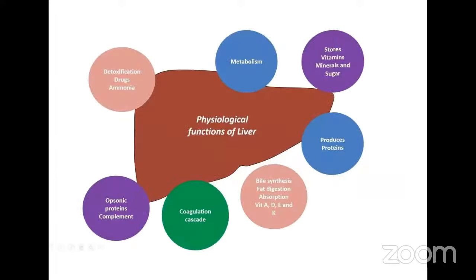There are hundreds of functions of the liver. The main functions include metabolic functions — it stores vitamins, minerals, and regulates sugar balance through gluconeogenesis and glycogenolysis. It produces all important proteins including albumin, and is important in fat digestion and absorption of fat-soluble vitamins A, D, E, and K. It also produces coagulation factors, complement proteins, opsonins, and is involved in detoxification of drugs and ammonia.